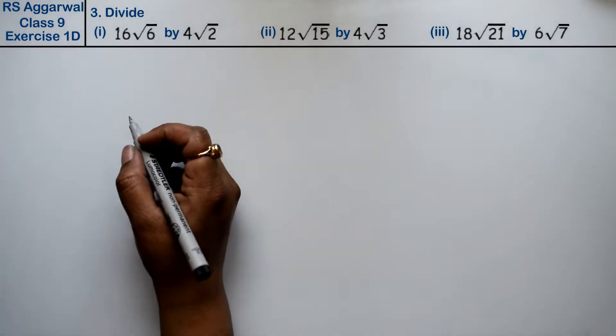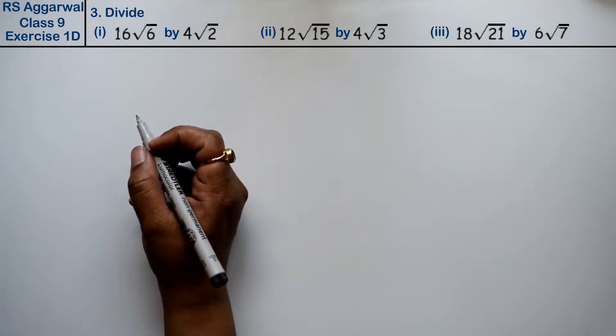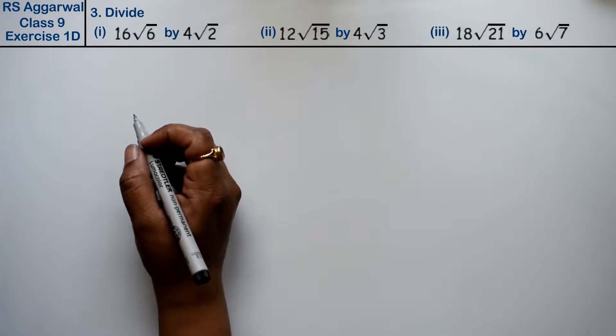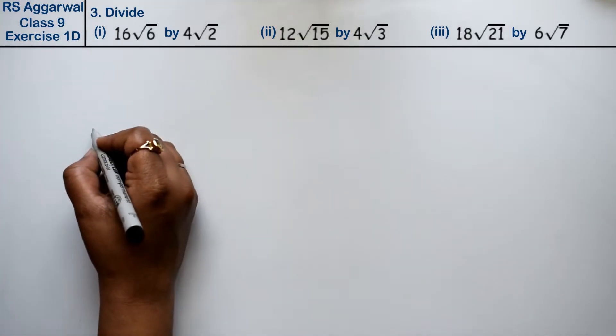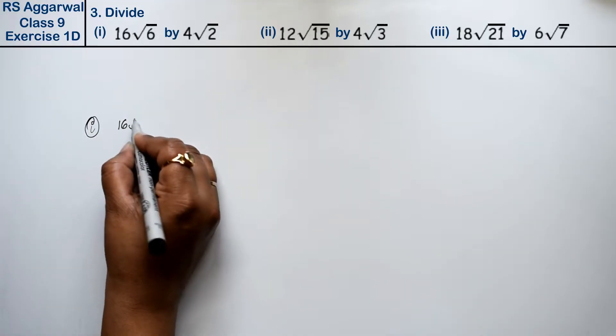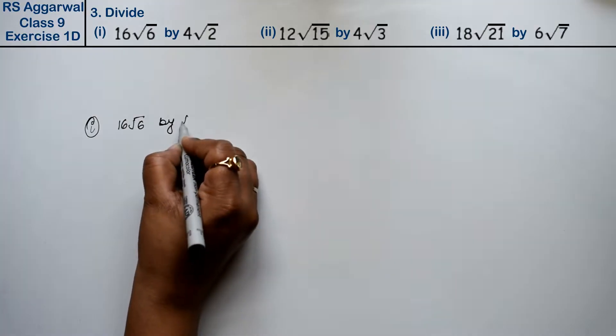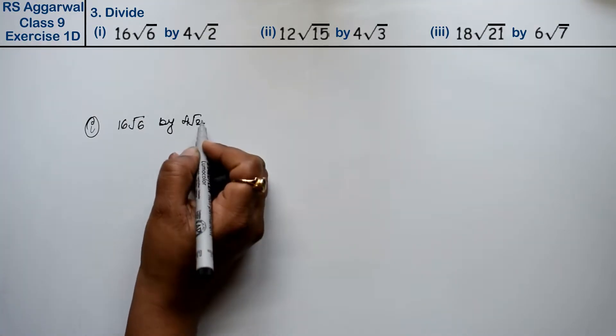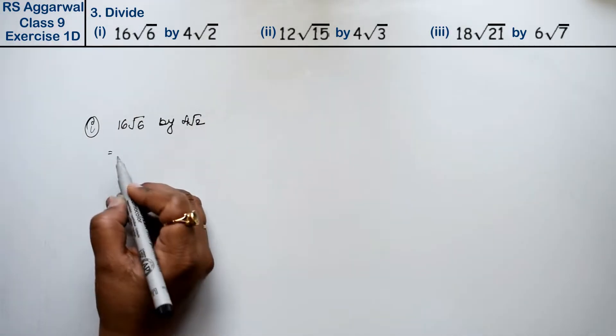Let's do question number 3 of exercise 1D, which is about number systems. The first part is 16√6 by 4√2. Now let's see how we do it.